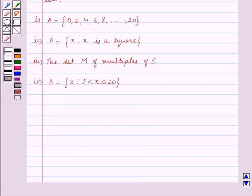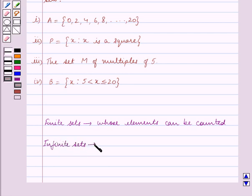Before we move on to the solution, let us first review the meanings of finite and infinite sets. Finite sets are the sets whose elements can be counted or the set which has finite number of elements. And infinite sets are sets whose elements cannot be counted. That is, the set which is not finite.